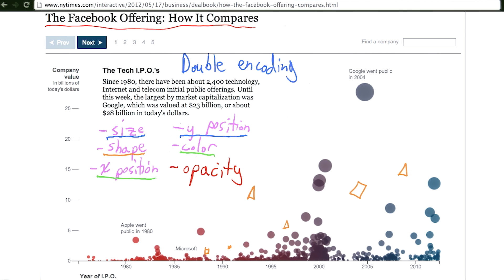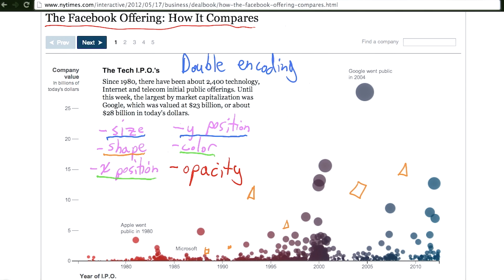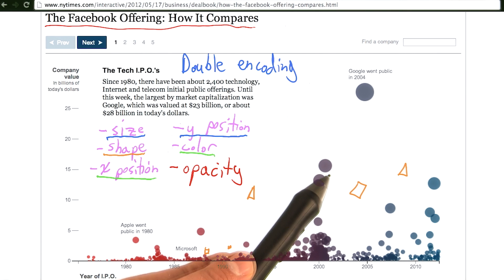A fifth encoding that we haven't explicitly covered, and is sometimes not formally thought of as a visual encoding, is opacity. Opacity is very similar to color saturation or density, but it is not exactly the same. The opacity in this case refers to how transparent each of the circles are. While the opacity doesn't communicate any information about the data points, it does allow us to see the relative distribution of the data points and how they overlap. Since there are many companies that apparently IPO'd in the year 2000 and they all had relatively small company values at the time, we see a very dense dark purple. As we go up, we have a few circles where we can notice the overlap, and some circles that are off on their own with no overlap.